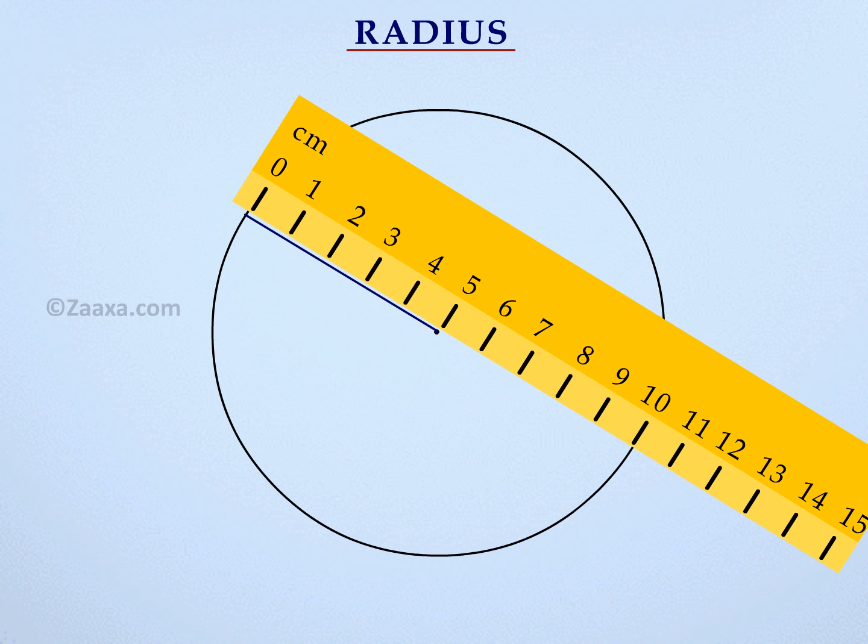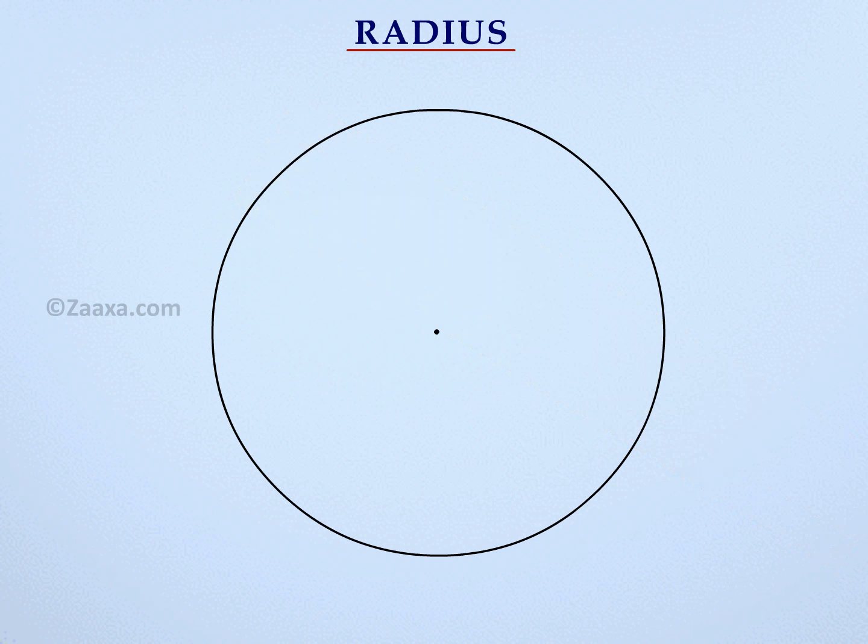We usually denote the center of the circle as O. Let us now mark a point P on the circle and measure OP. We see that OP is equal to 5 cm. We say that OP is a radius of the circle.